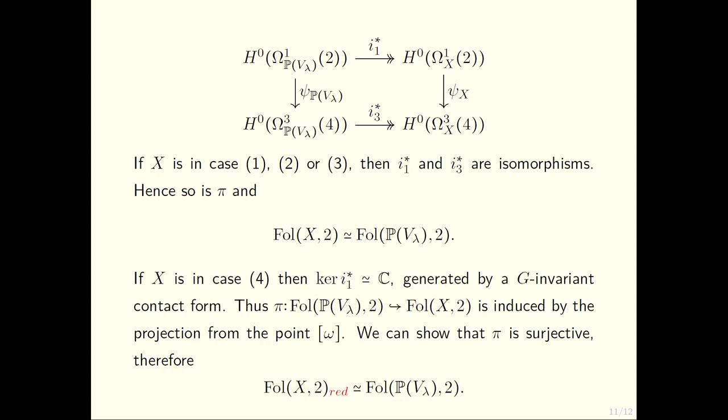We use this fact to prove that when restricted to the space of foliations, this map π is surjective and an embedding. In this case we can at least say that Fol(X,2)_red ≅ Fol(ℙ(T_X),2), the reduced structures are the same.